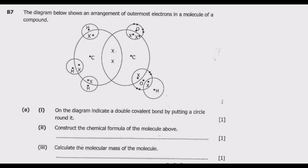Question B7: the diagram below shows an arrangement of outermost electrons in a molecule of a compound. Question (a), Roman numeral 1: indicate a double covalent bond on the diagram by putting a circle around it. We just need to identify which one is a double bond. If you notice here, this is a single bond because we have one electron donated by C and one by hydrogen.